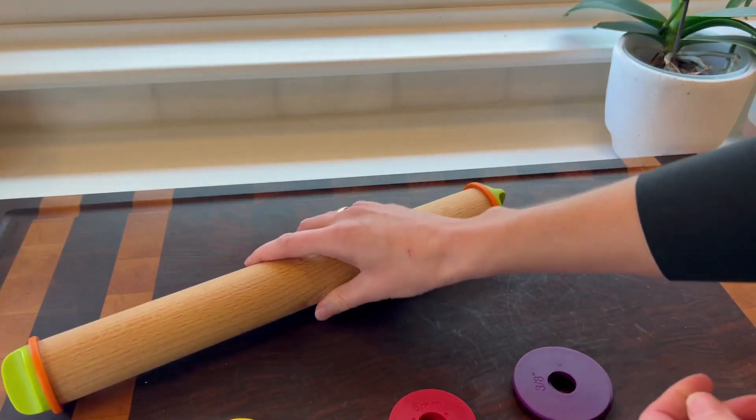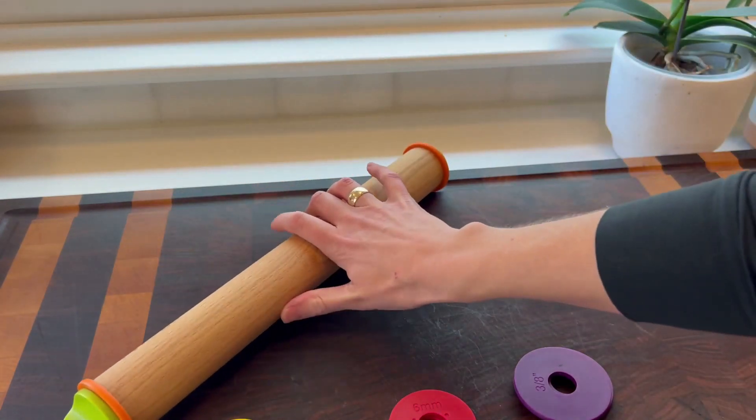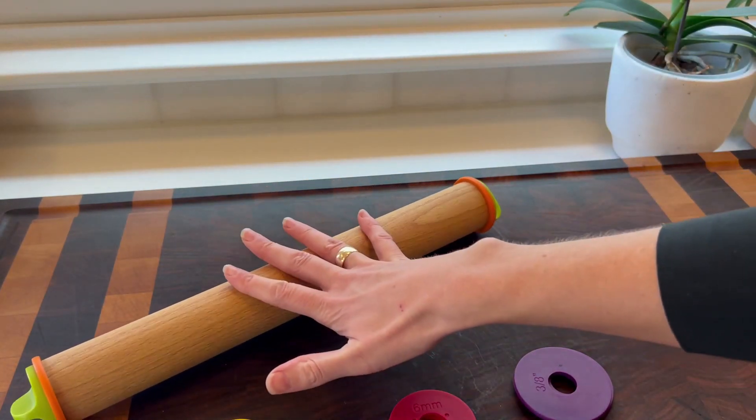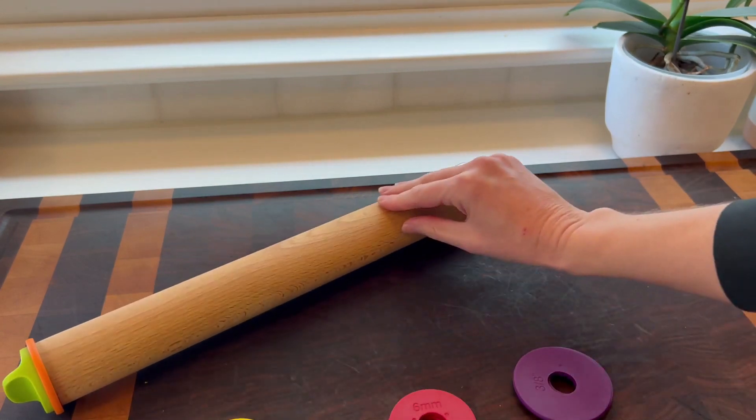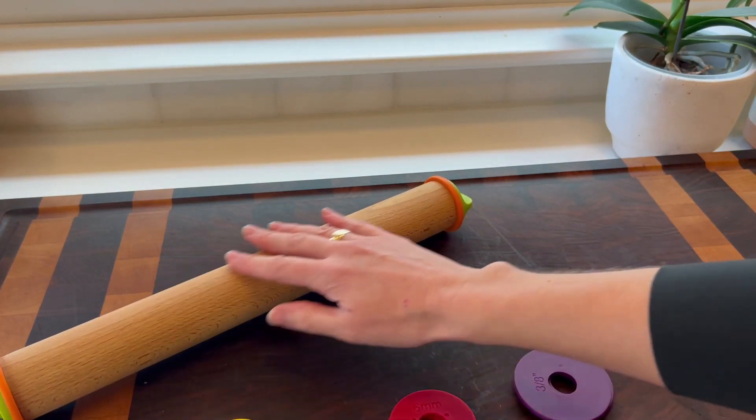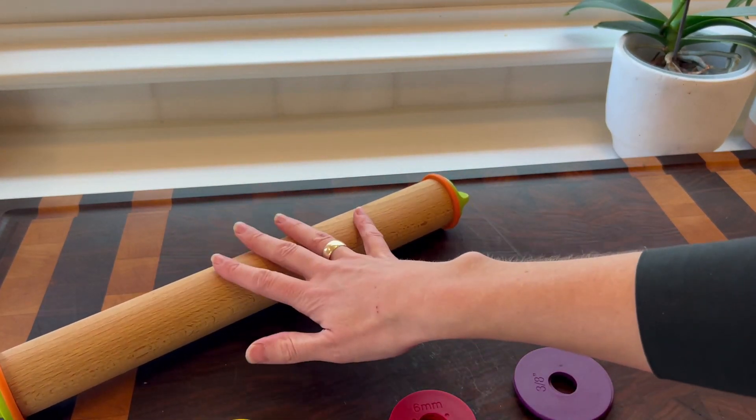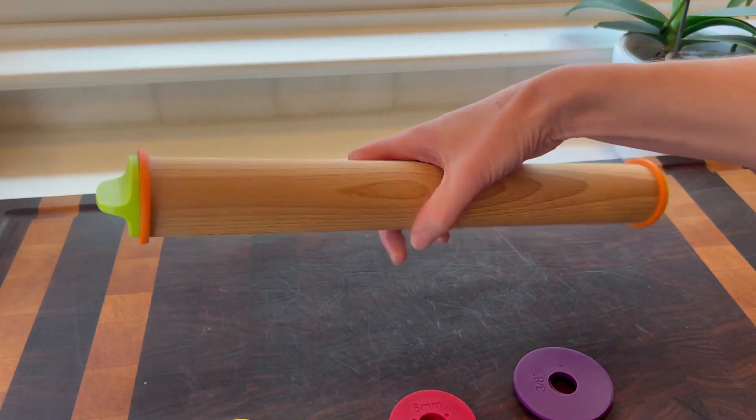I specifically use this for things like sugar cookies, something I want a perfect thickness on every time so they cook evenly. Again, everything on here is super easy to clean. These pieces can all go in the dishwasher.